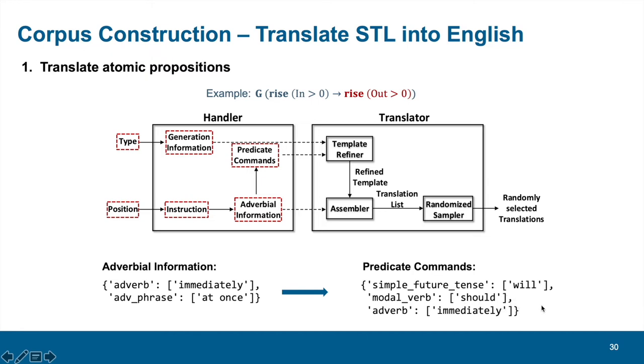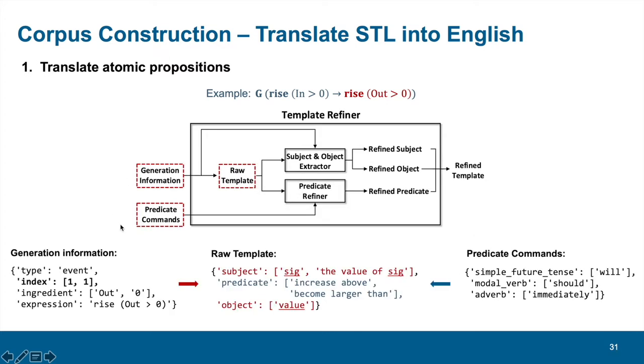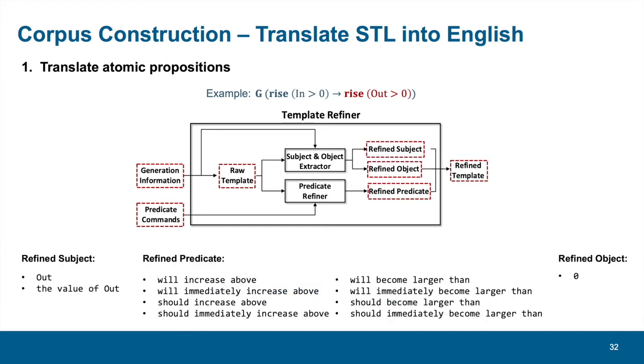Next, two outputs of the handler, namely the generation information and predicate commands, are sent to the template refiner. In this module, raw translation template will be retrieved according to the index in the generation information. Then, we can use the string in the ingredient field of generation information to replace underlined placeholders in the subject and object parts of the raw template. Similarly, we can use the predicate commands to refine the raw predicates provided. Finally, we can obtain the refined subject, predicate, and the object as shown in this slide.